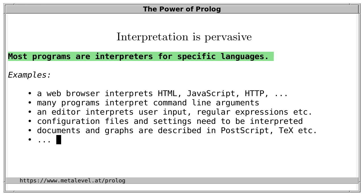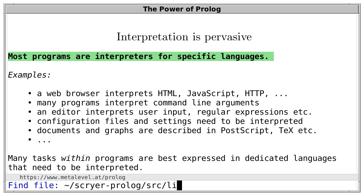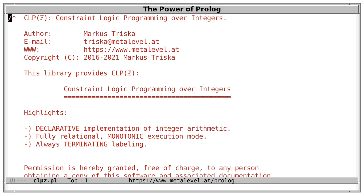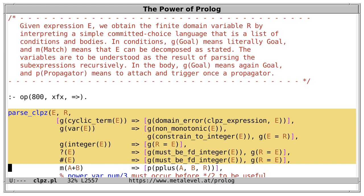For example, every letter here is drawn by interpreting a small language — in this case, a set of points defining Bézier curves. Here's a set of points: two endpoints and two control points for each curve segment. The curves are drawn by recursively subdividing segments and computing certain points that belong to the curve. In a few iterations we get quite smooth curves, which we only need to fill in a final step. This is how every letter here is drawn — computed dynamically by applying certain instructions to the input. In fact, this entire presentation is the result of interpreting a program with GNU Emacs. So many programs are interpreters also in practice.